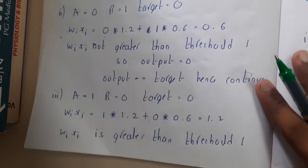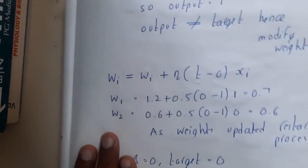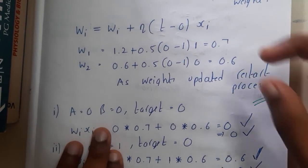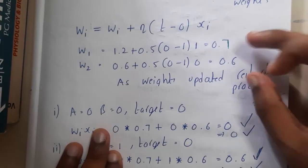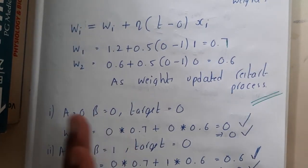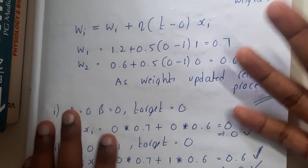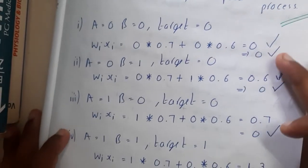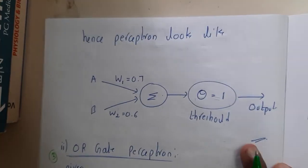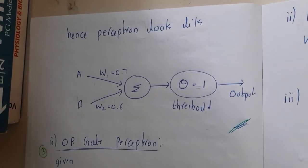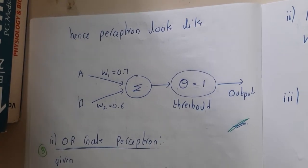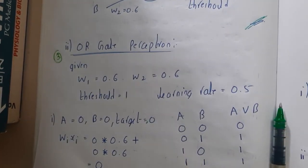You can refer to the book where I have written it step by step. Remember: whenever you have updated the weights, you must restart the process. If you continue without restarting, you may end up with a wrong answer. After restarting, cross-check all outputs; once they match the target, draw the final perceptron. In the next lecture we will go through the OR gate.